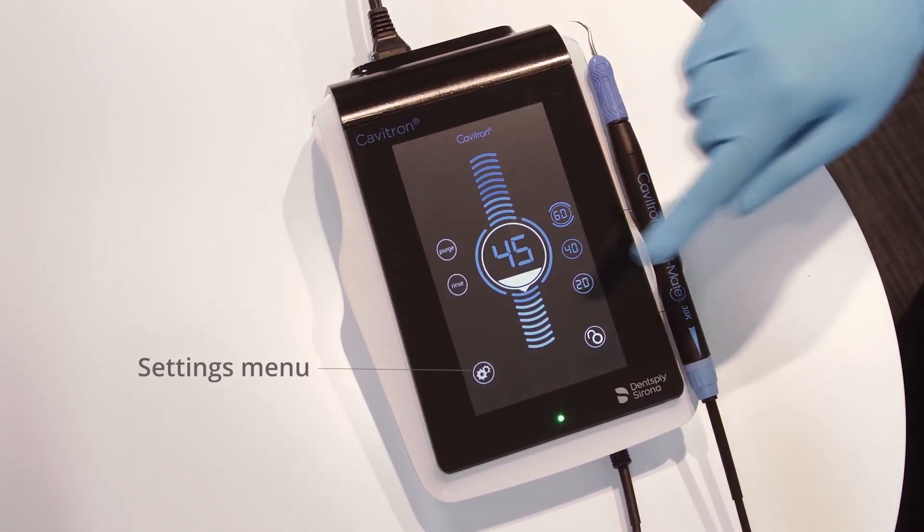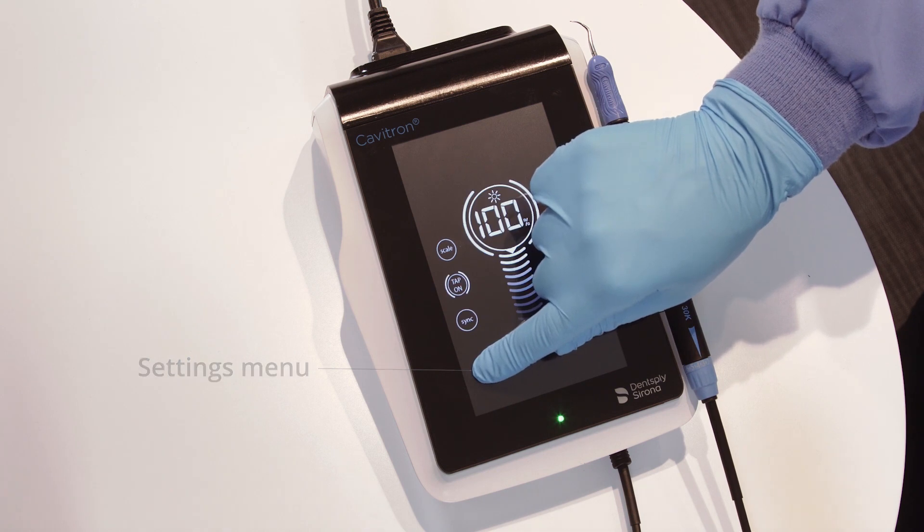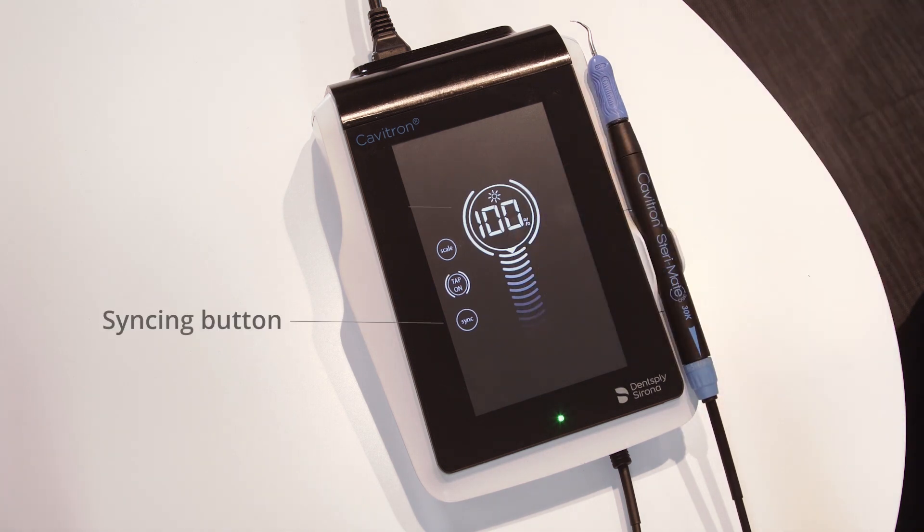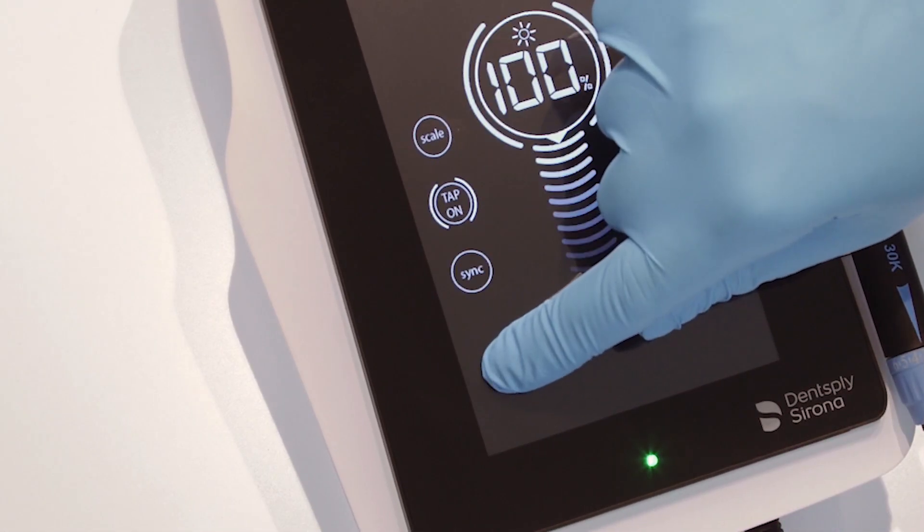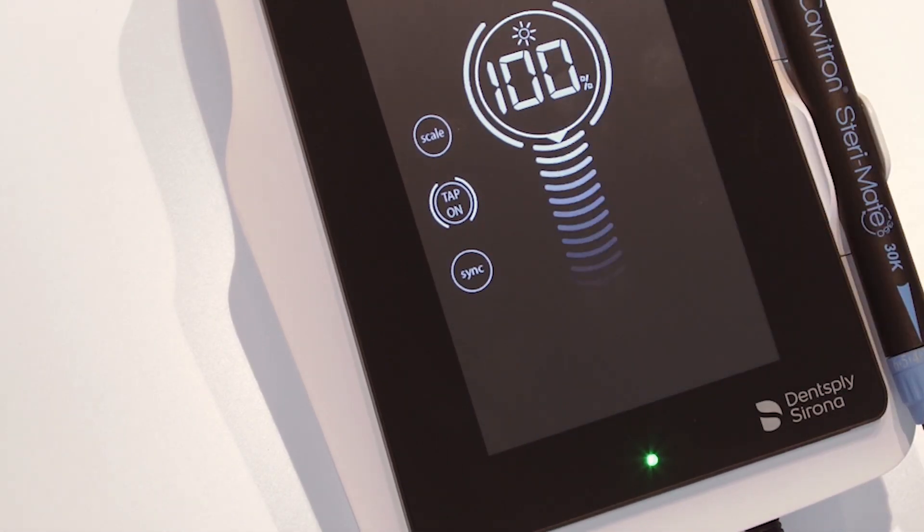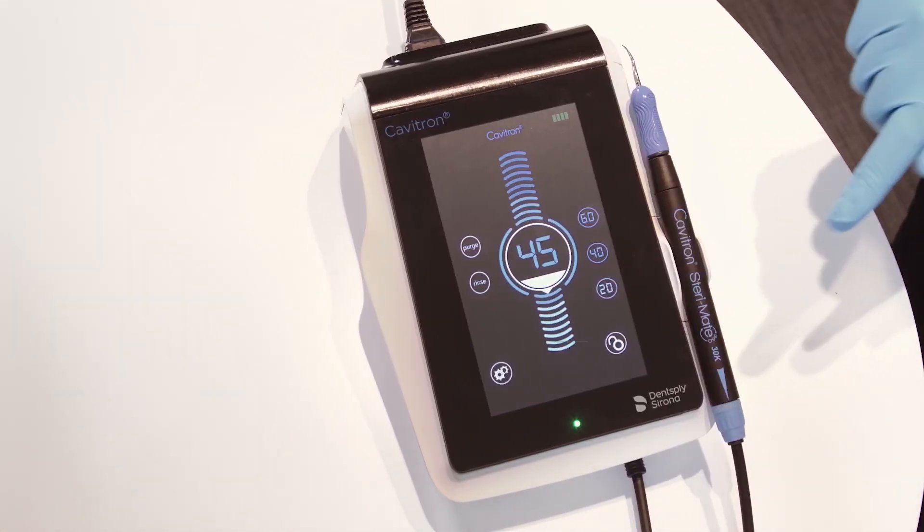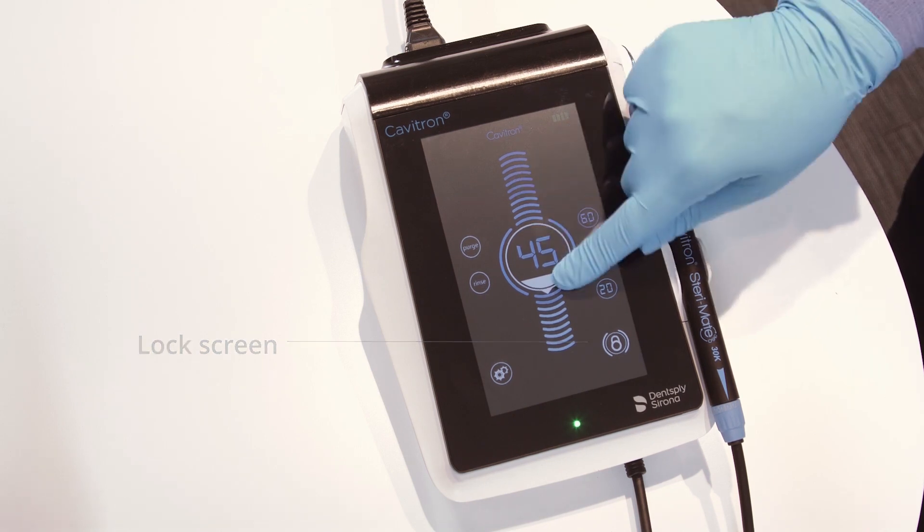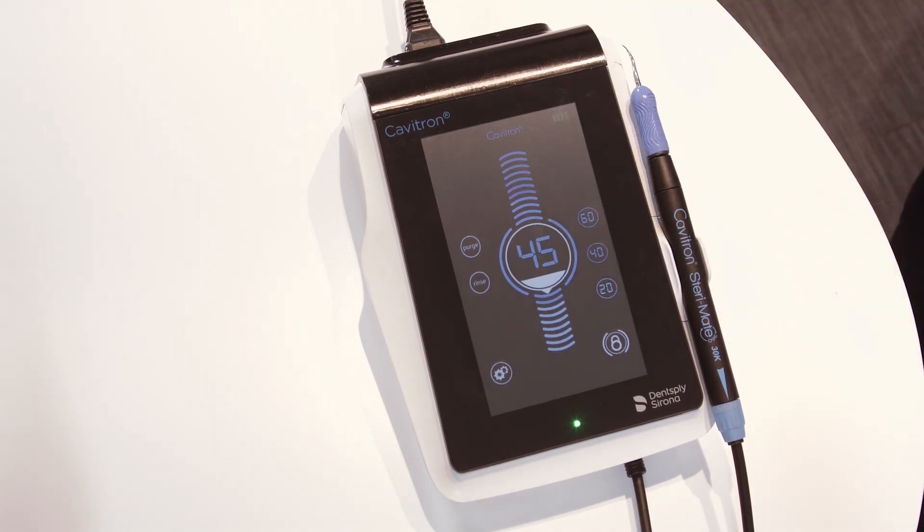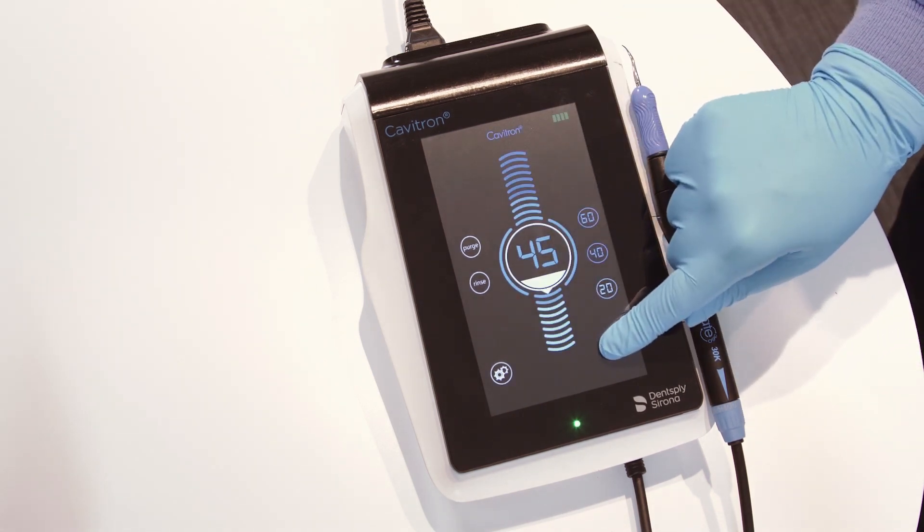The settings icon accesses the menu allowing for syncing of the foot pedal to the unit, brightness setting and the tap on technology foot pedal control setting. To access the settings menu, press and hold the icon for two seconds. The lock icon is pressed and held for two seconds to lock the screen, disabling adjustment of any parameter until the unlock icon is pressed and held for two seconds.